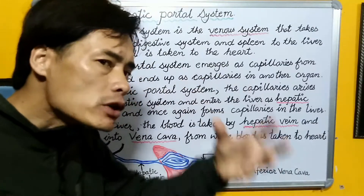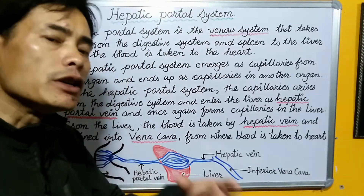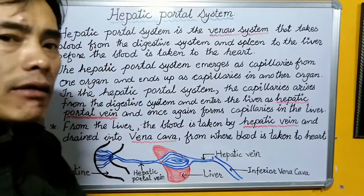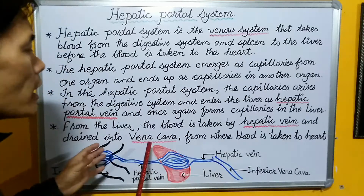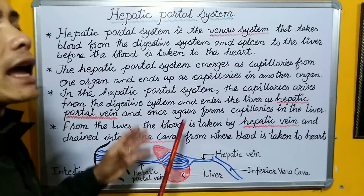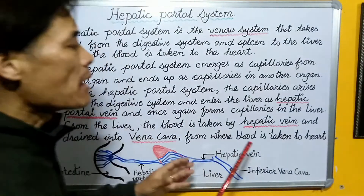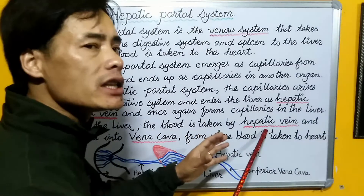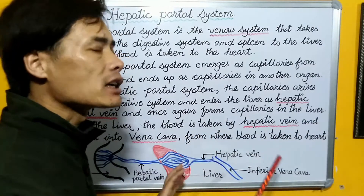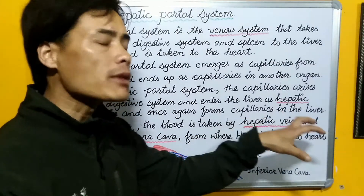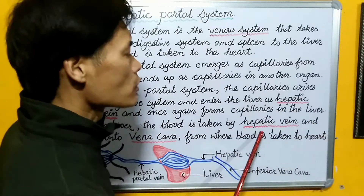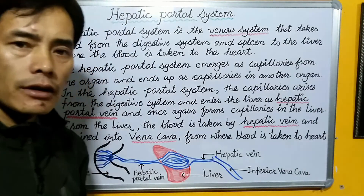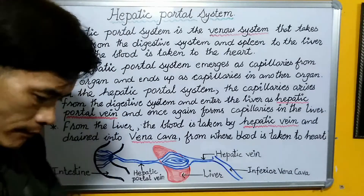The blood has to be drained into the inferior vena cava from the liver, and that is done by means of another vein that comes out from the liver, which is called the hepatic vein.